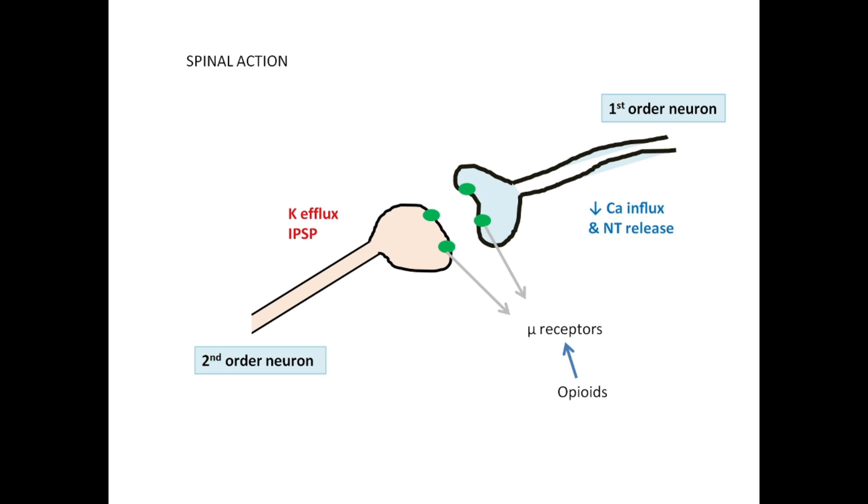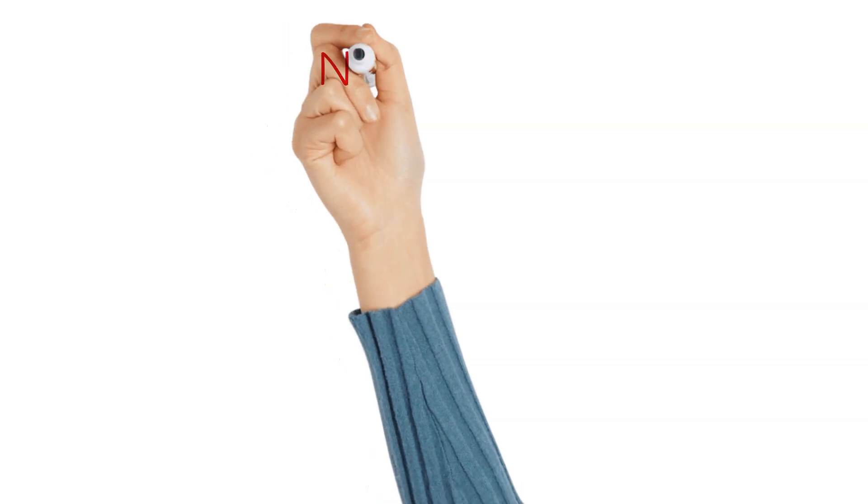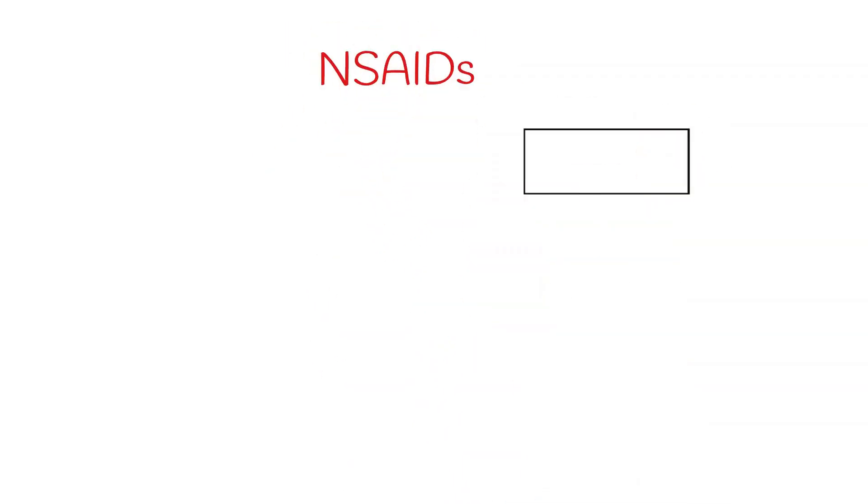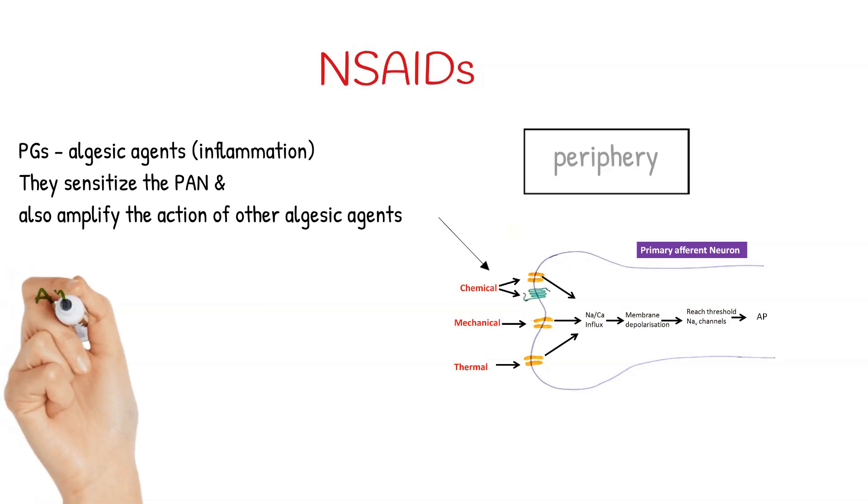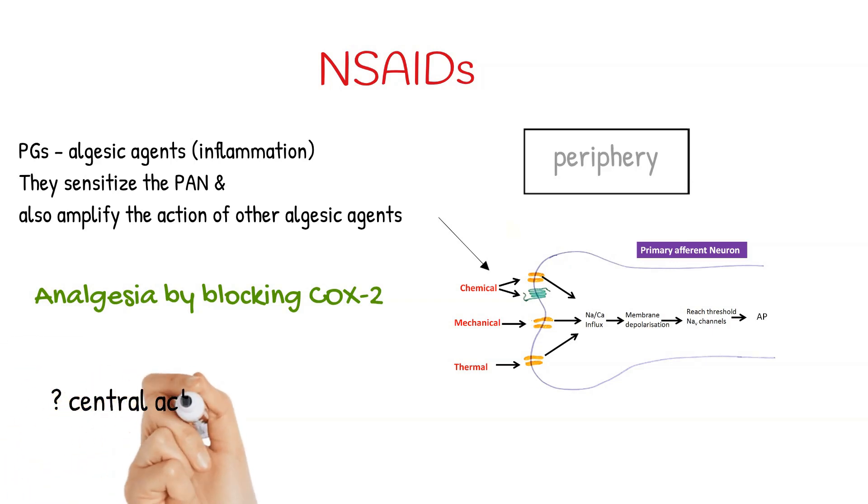The mechanism of action of nonsteroidal anti-inflammatory drugs. These drugs mainly have peripheral analgesic action, as compared to opioids which has primarily central analgesic action. Prostaglandin is an algesic agent. Prostaglandin sensitizes the primary efferent neuron and it also amplifies the action of other algesic agents like bradykinin, interleukin, and tumor necrosis factor alpha. So by blocking the synthesis of prostaglandin, by inhibiting the enzyme cyclooxygenase, NSAIDs act as analgesics. Of late, NSAIDs are also believed to have some central action. It blocks the prostaglandin synthesis in the spinal dorsal horn as well as the brain, thereby inhibiting sensitization that is produced by prostaglandins.